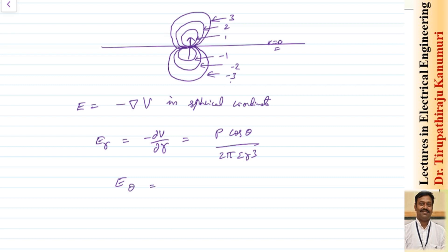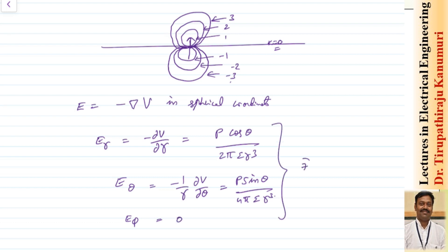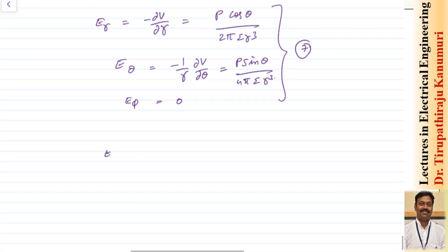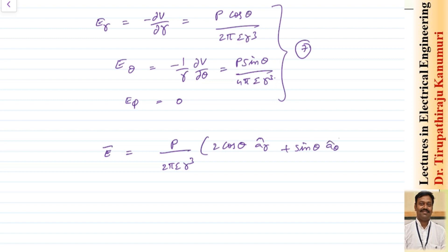Similarly, taking 1 by R into dV by d theta, this will become P sin theta divided by 4 pi epsilon into R cubed. Similarly, E_phi: since there is no variable phi in the voltage equation, this will be equal to 0. Let us take it as equation number 7. So from this equation, the total value of electric field intensity at any point will be equal to P divided by (2 pi epsilon R cubed) into (2 cos theta in the direction of A_R plus sin theta in the direction of A_theta). Let us take it as equation number 8.